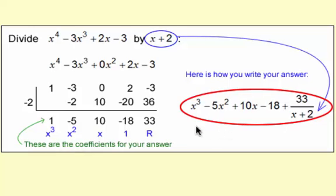And also, here's how you write it. Your results down here of 1, negative 5, 10, negative 18, 33, these all correspond to terms in the polynomial. So this is the quotient polynomial.